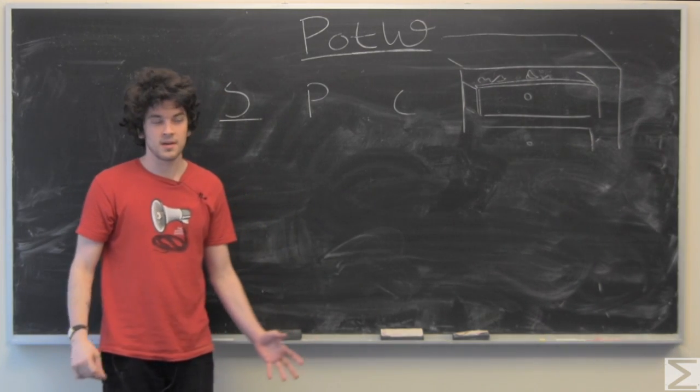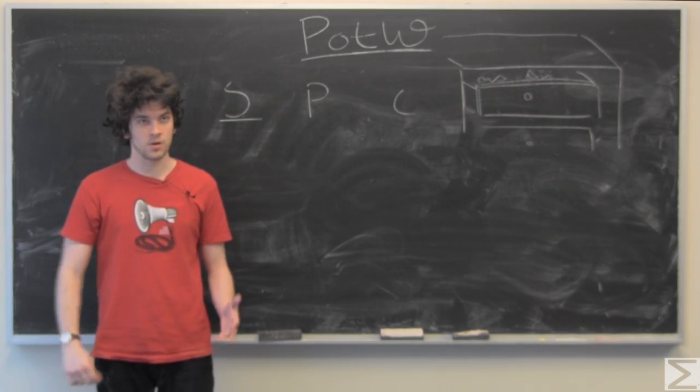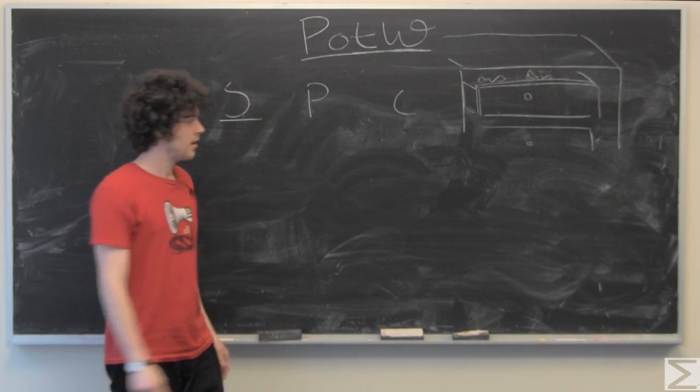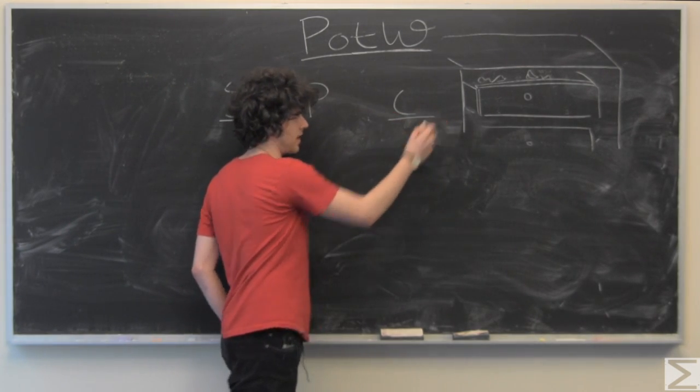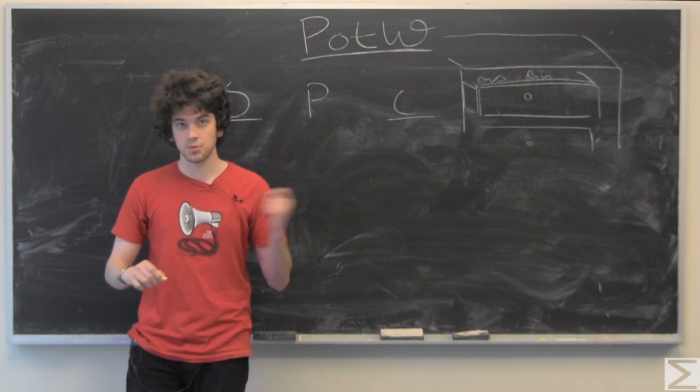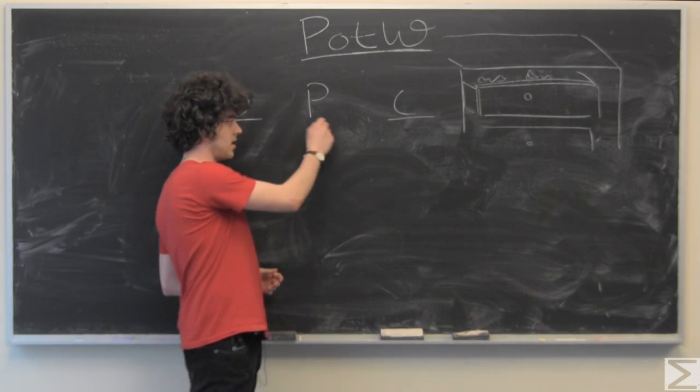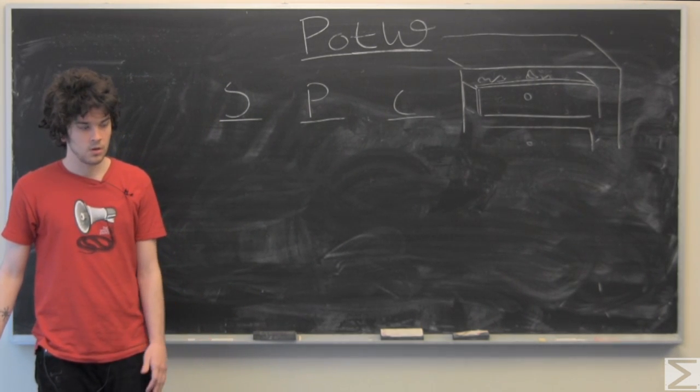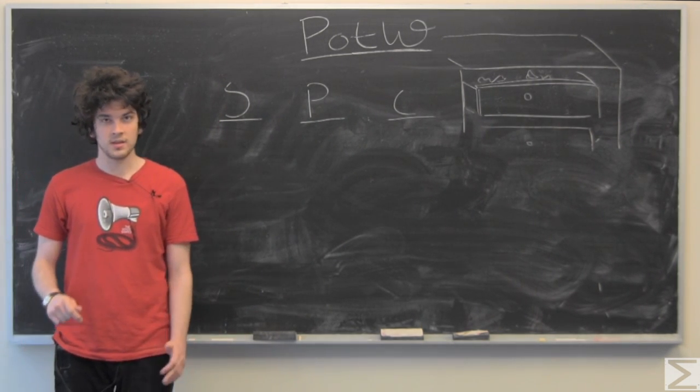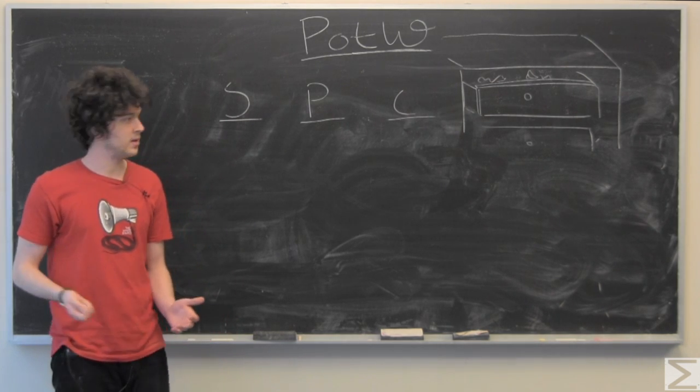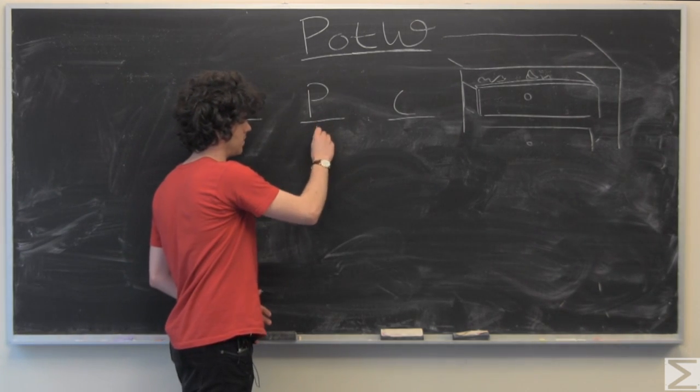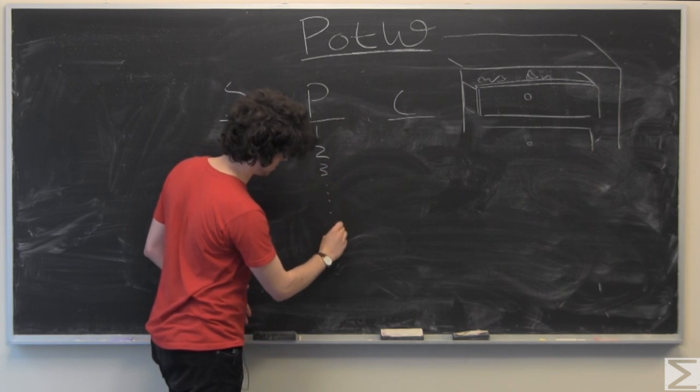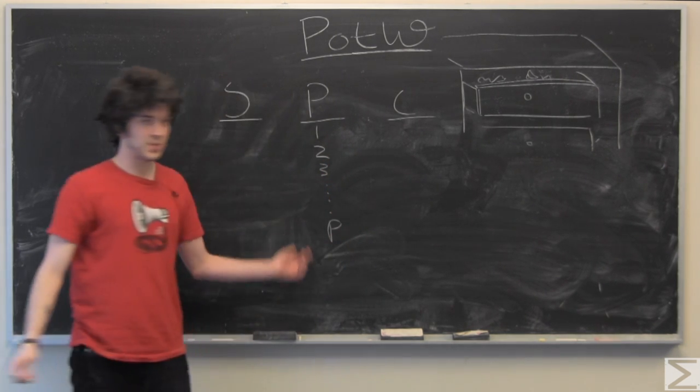But the problem is that the socks in this drawer are completely disorganized, so we want to know how many socks we need to pull out of the drawer in order to get a certain number of pairs. We're going to look at all the numbers of pairs, 1, 2, 3, all the way up to p pairs.